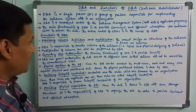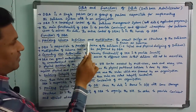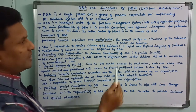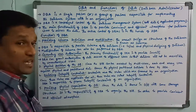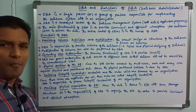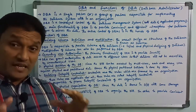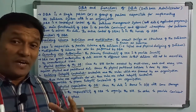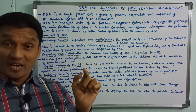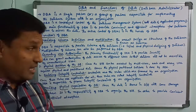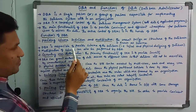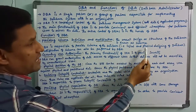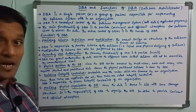The first function of DBA is providing schema definition and modification. The overall design or structure of a database is known as schema. The complete overall structure and designing of a database is nothing but a schema. DBA is responsible to provide the schema of the database, that is the logical and physical designing of the database.